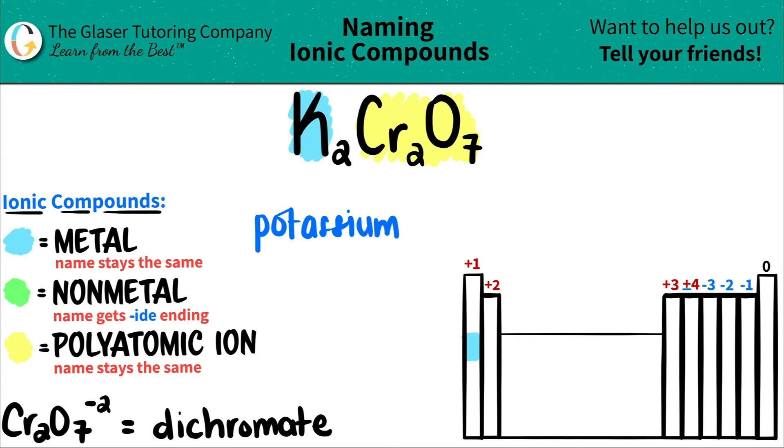Next comes the polyatomic. And the polyatomic ions, those stay exactly the same. But that's why you just got to memorize them. The periodic table won't help you with that. So the Cr2O7 is dichromate.